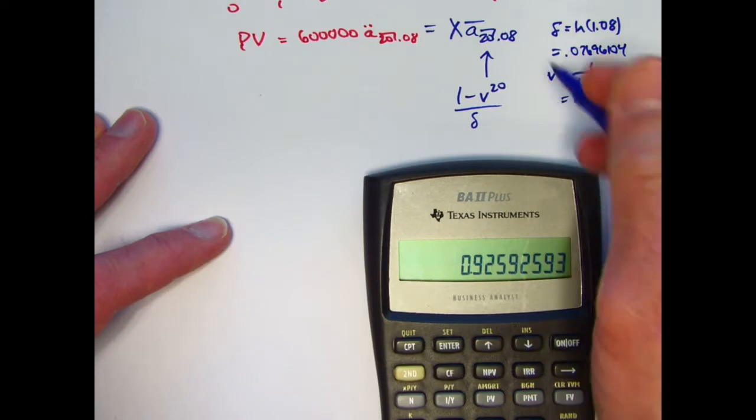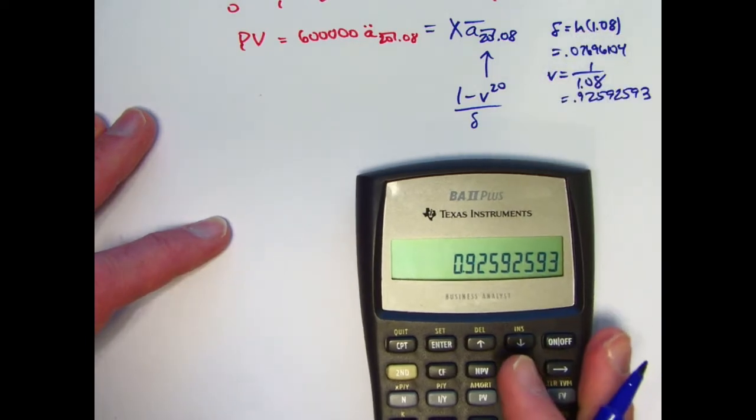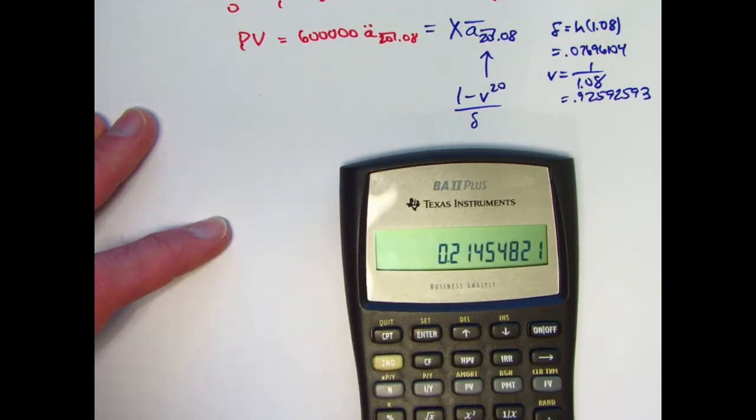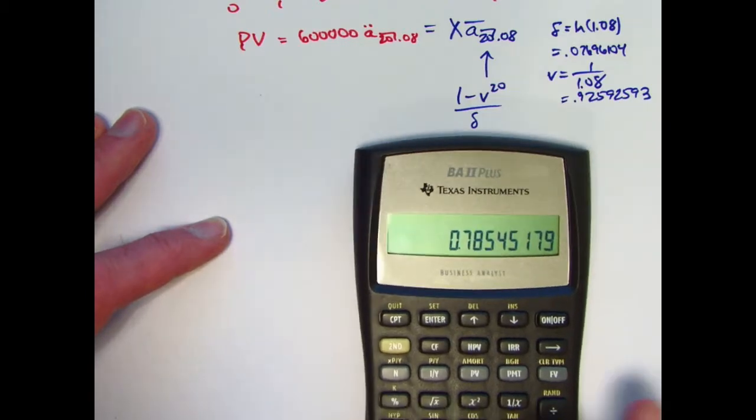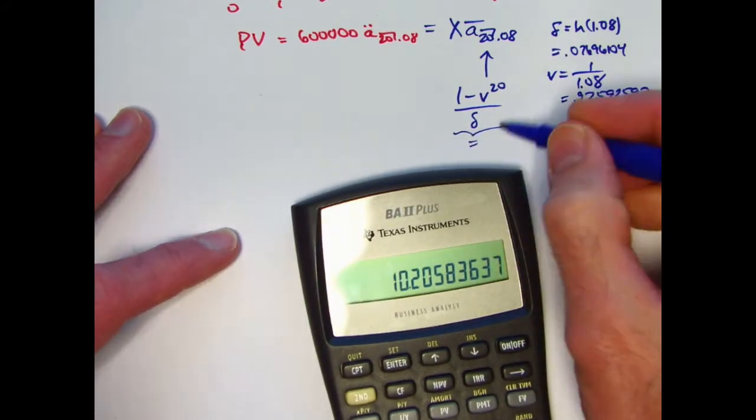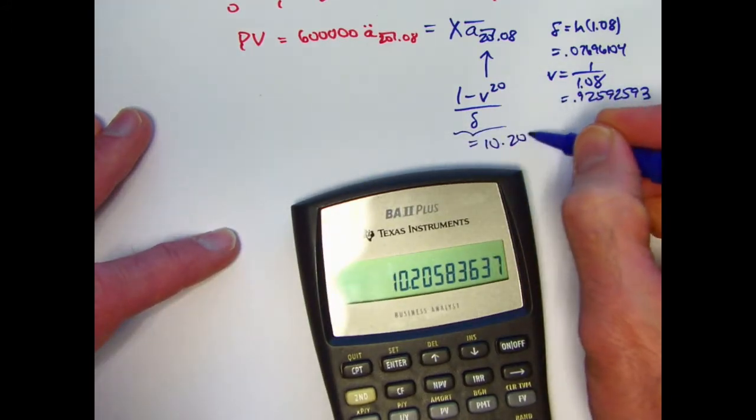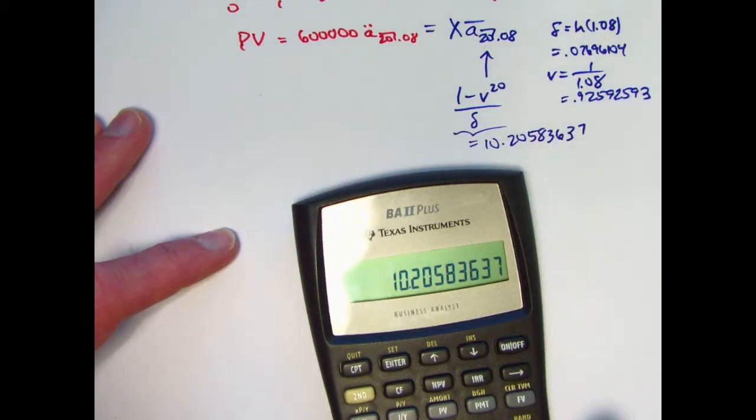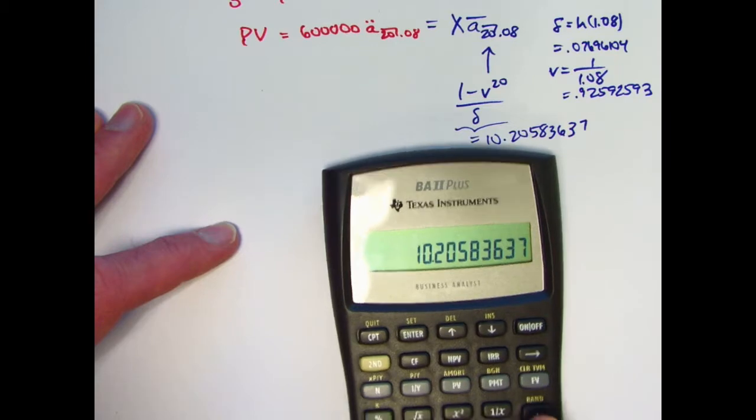All right, let's go ahead and figure out what A bar is here. Take this v and raise it to the 20th power. There it is. Subtract it from 1. Now divide by delta, which is in register 0. This quantity right here equals 10.20583637. I'm going to have to divide by that, so I think I will store that in register 2.